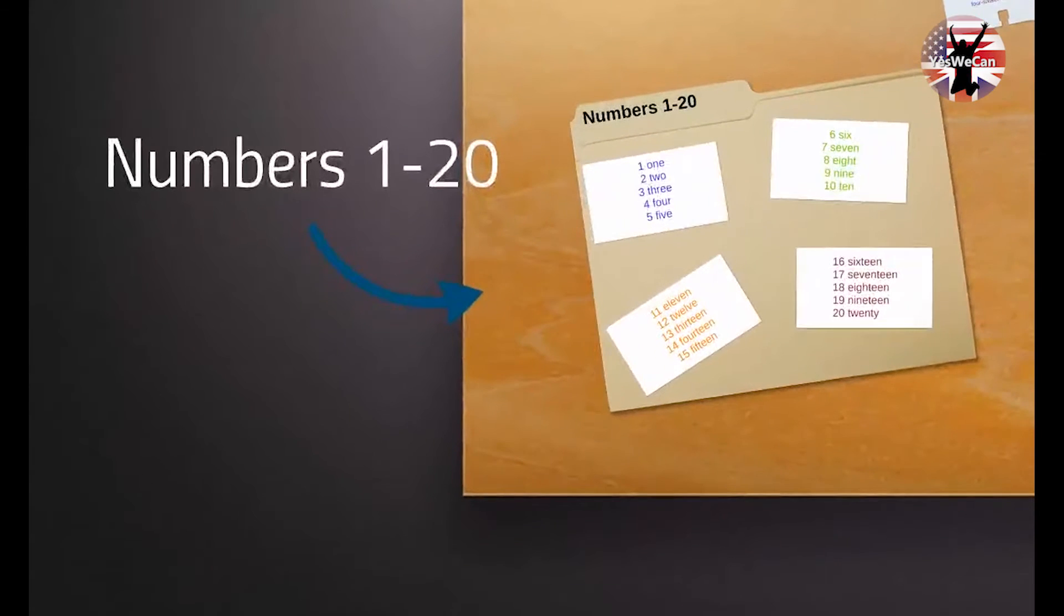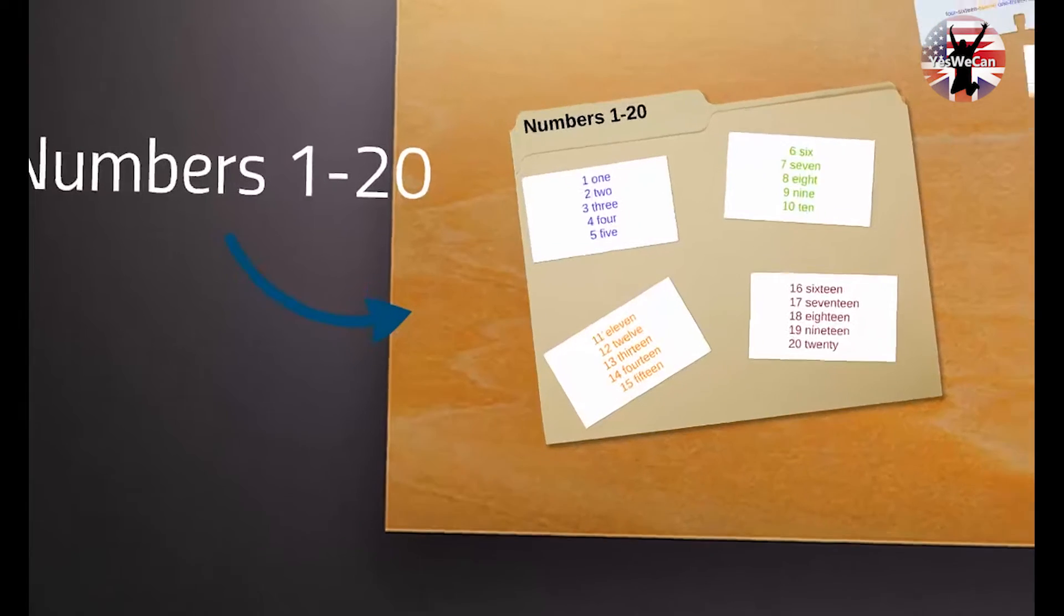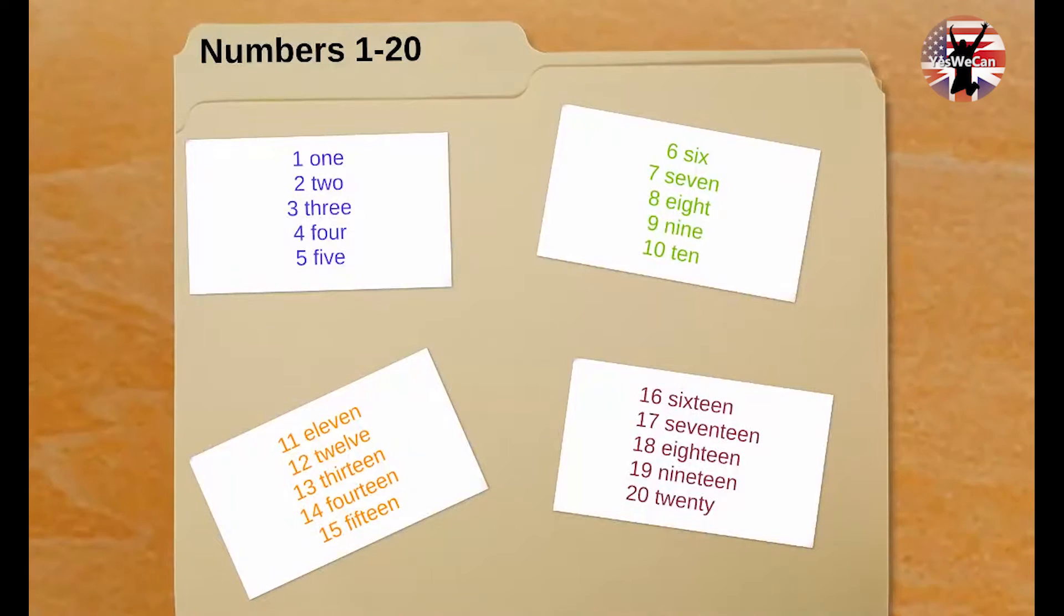Numbers 1 to 20. If you still don't know the numbers in English from 1 to 20, or if you still have difficulty, the best thing to do is to pick up your notebook and write the numbers from 1 to 20 on the lines, and then next to it, write the written form of each number as shown in the video. This way you will practice and at the same time remember in an easier way.